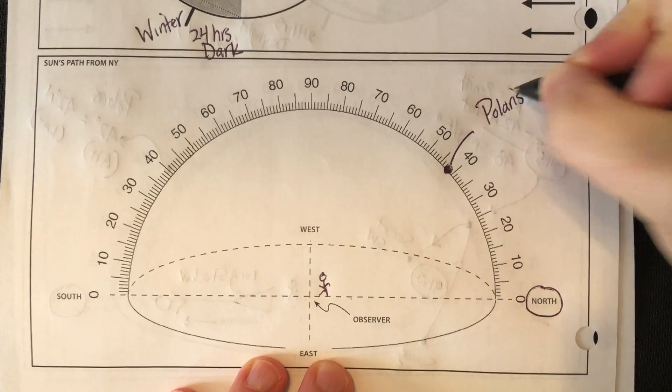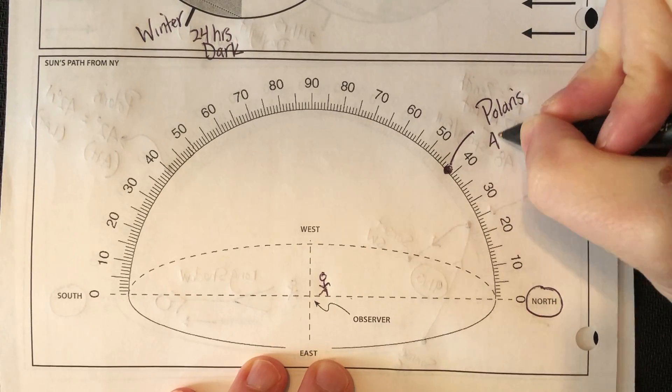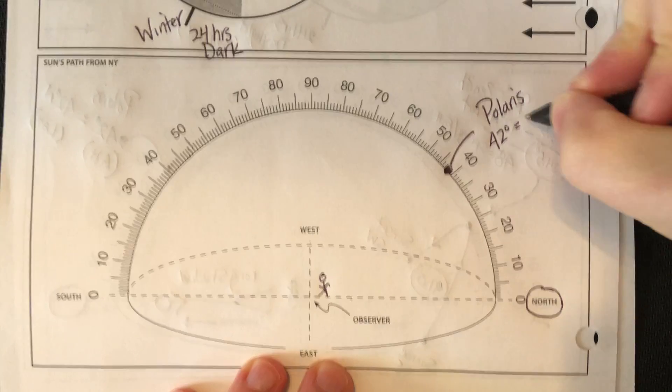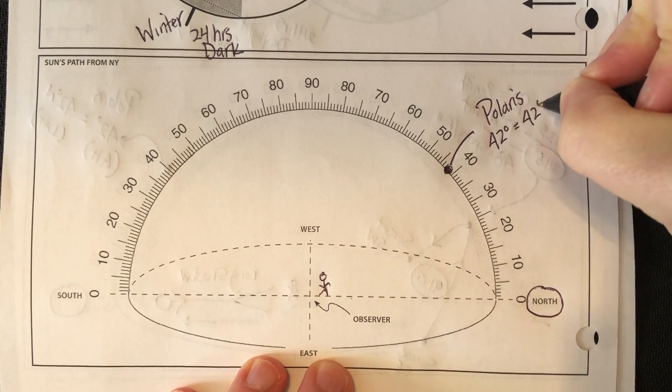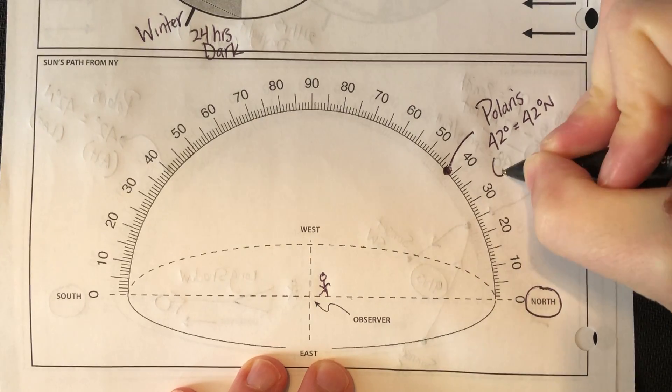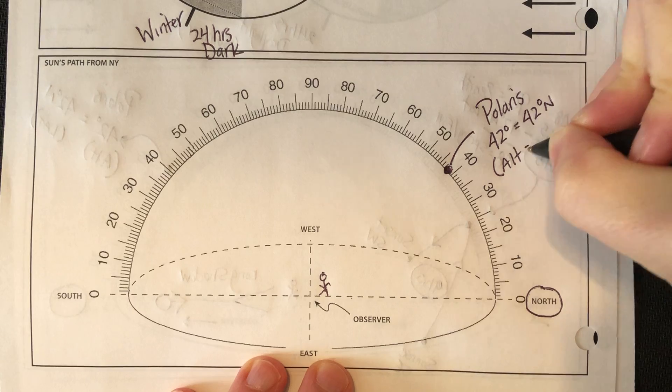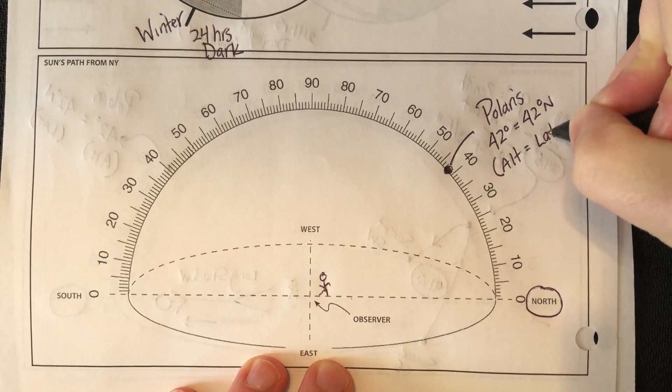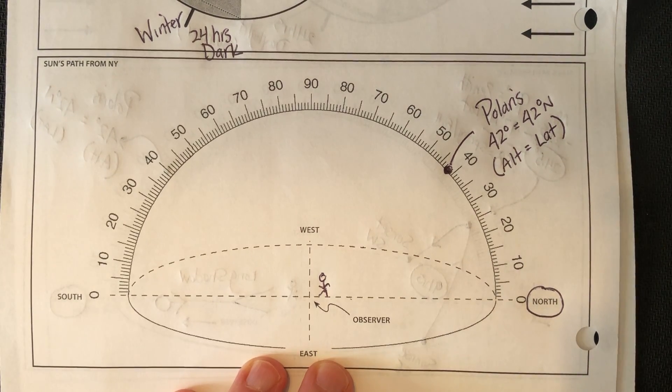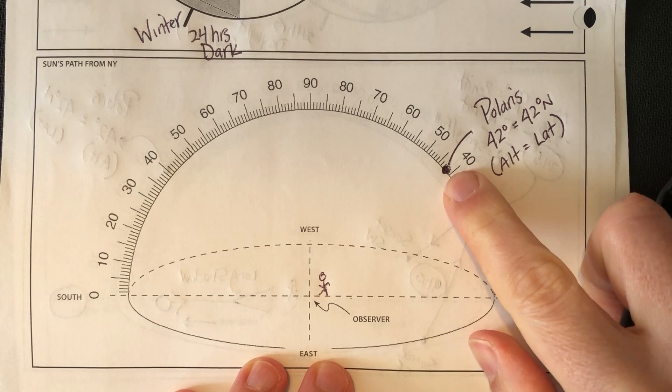In this case, Polaris' altitude is 42 degrees, which means its latitude is 42 degrees north. Altitude equals latitude. It's really the only object in the sky you look north.